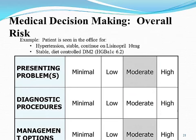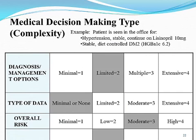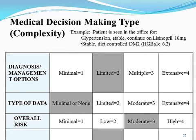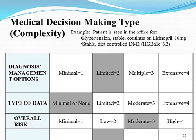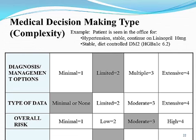Going back to the overall medical decision-making example: two of the three elements must be either met or exceeded. For diagnosis management options, we have two stable problems worth one point each — that's limited, which is two. Type of data: there was the hemoglobin A1c reviewed at 6.2, so only one point there. Overall risk was moderate. We have a split because we don't have two of the three elements met or exceeded at the same level. When you have a split, you take the one in the middle — in this situation, low complexity medical decision-making. Our tool will do the work for you once you extract the documentation and plug it in.